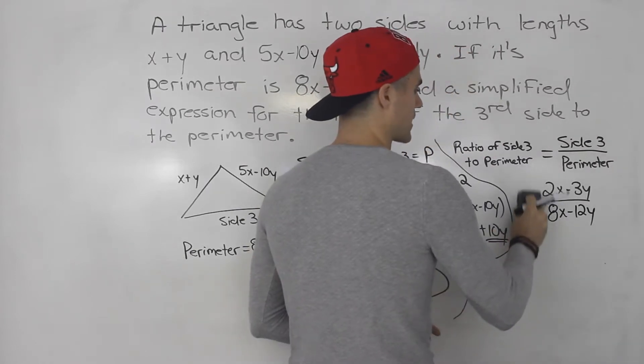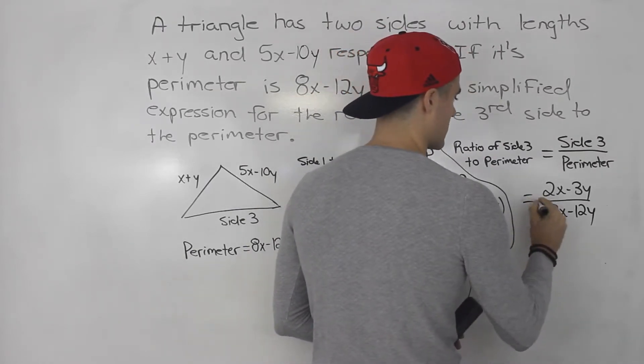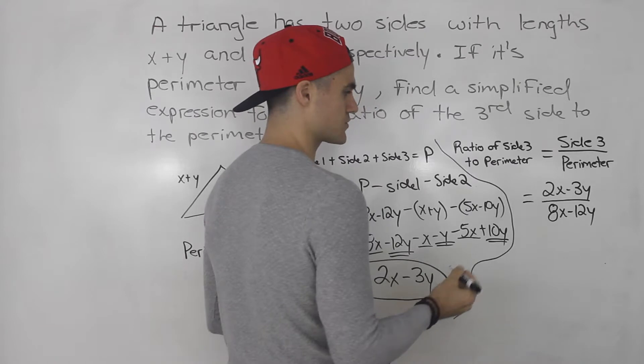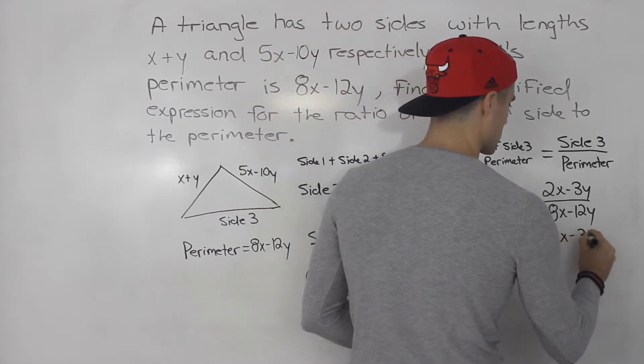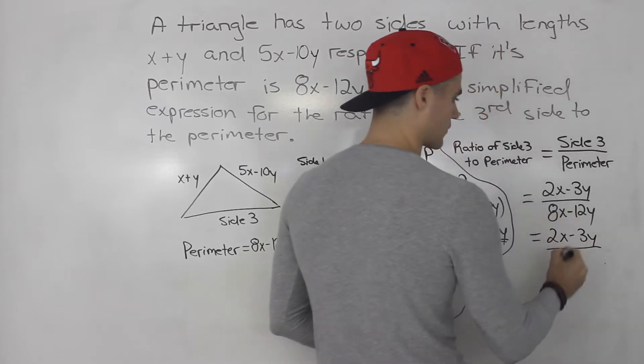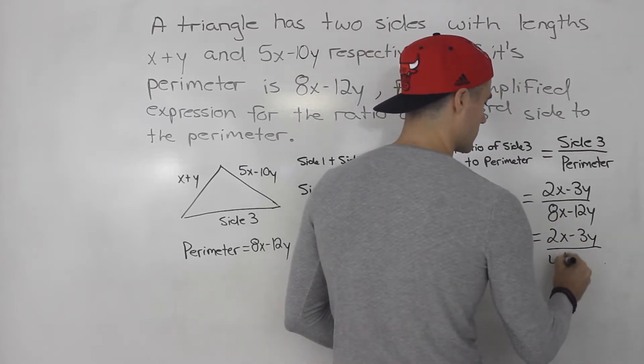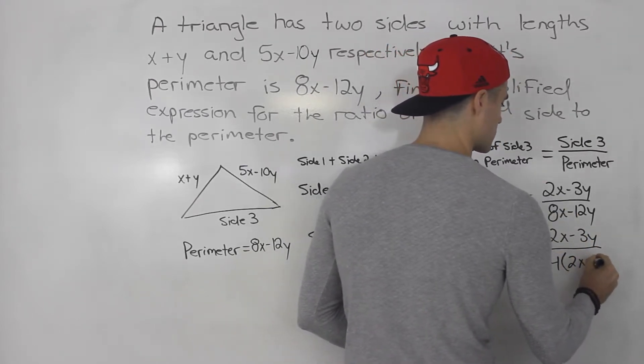So notice how this is now a rational expression, we have to simplify it. First thing we want to do is factor. So we've got 2x minus 3y. Notice we could factor out a 4 in the bottom, so we would be left with 2x minus 3y as well.